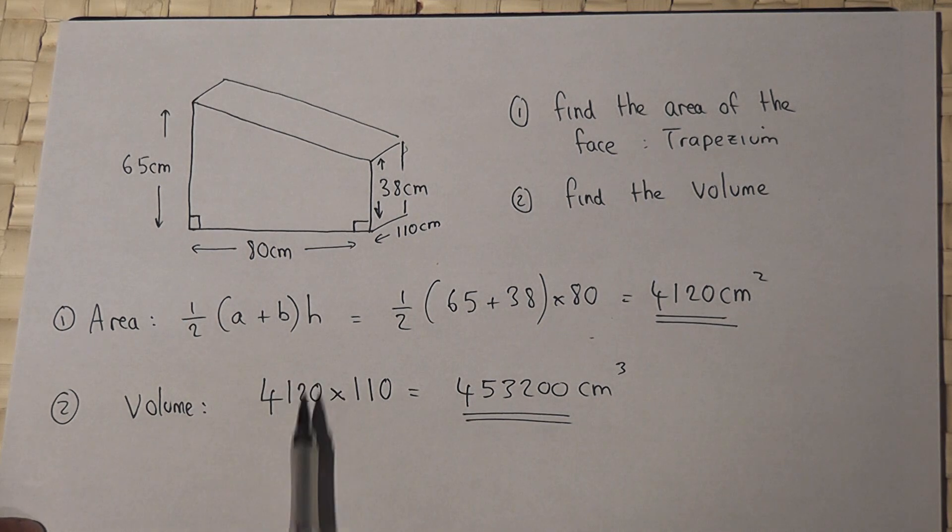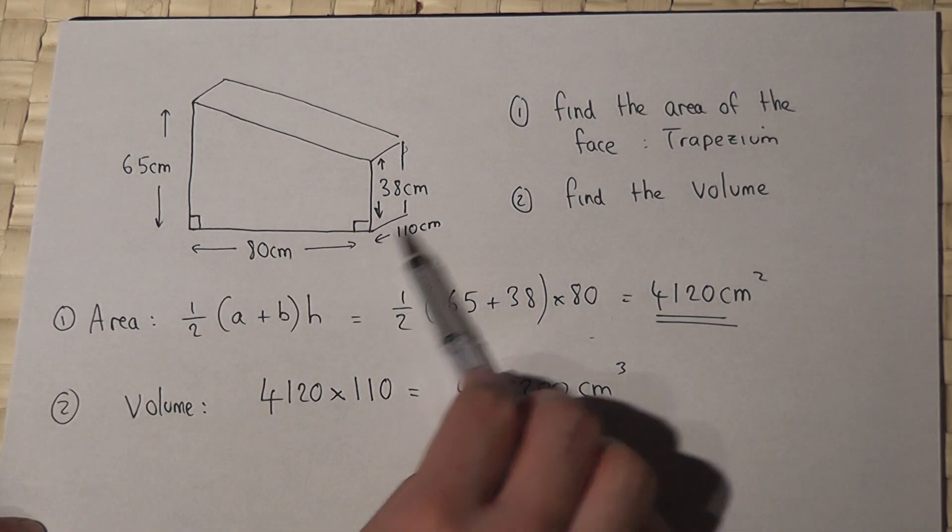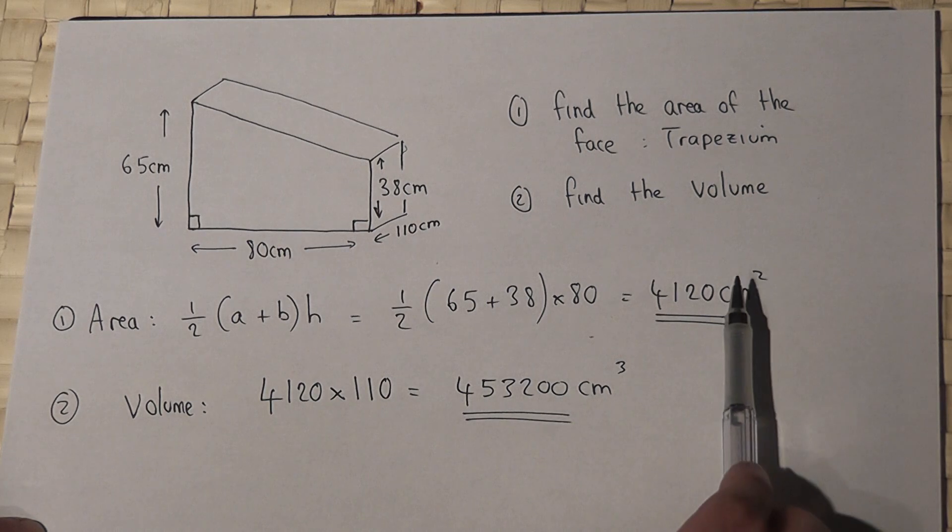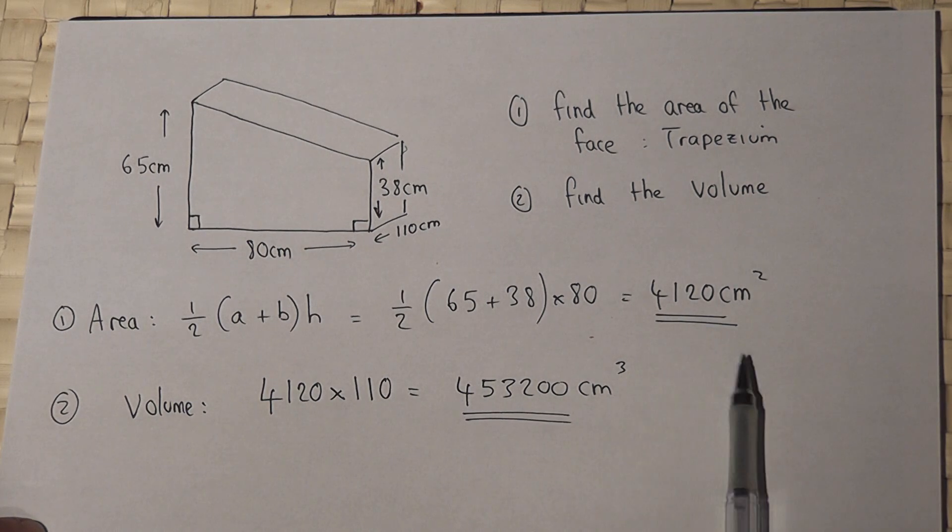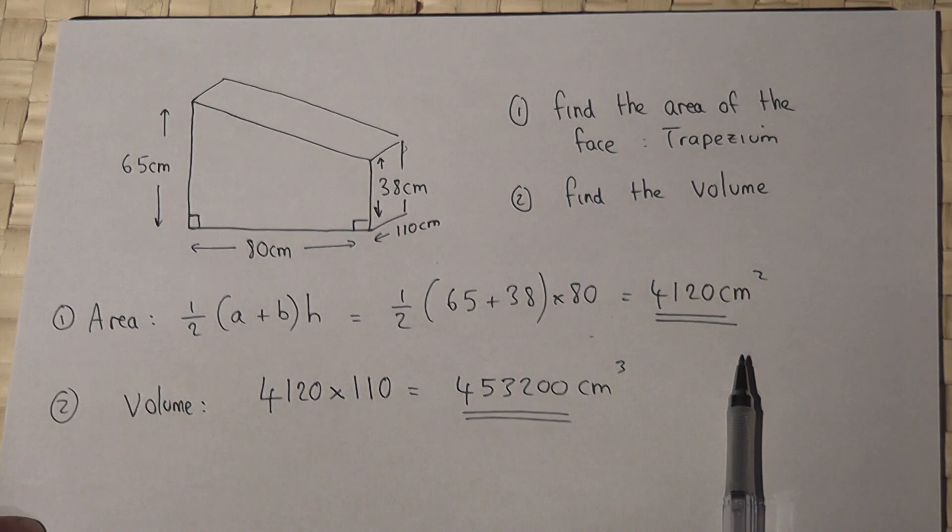Then, to find a volume, we times the area by the depth. And don't forget the units. Squared for an area, cubed for a volume. Now, we'll be on the bottom. Thank you.